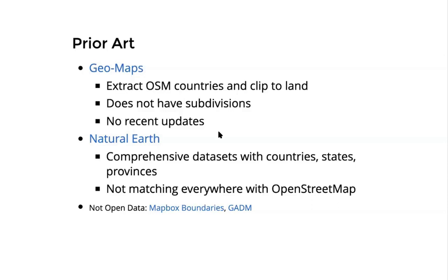Another great project is Natural Earth, which is a comprehensive dataset with countries, states, and provinces. But the problem is it's made for different scales and is very generalized data that doesn't match well with OpenStreetMap — if you use it on top of an OpenStreetMap base map, you might get misalignments. For completeness, Mapbox also has a product called Mapbox Boundaries, and there's another project called GADM, but both of these are not open data — with Mapbox you're locked into always using their API.